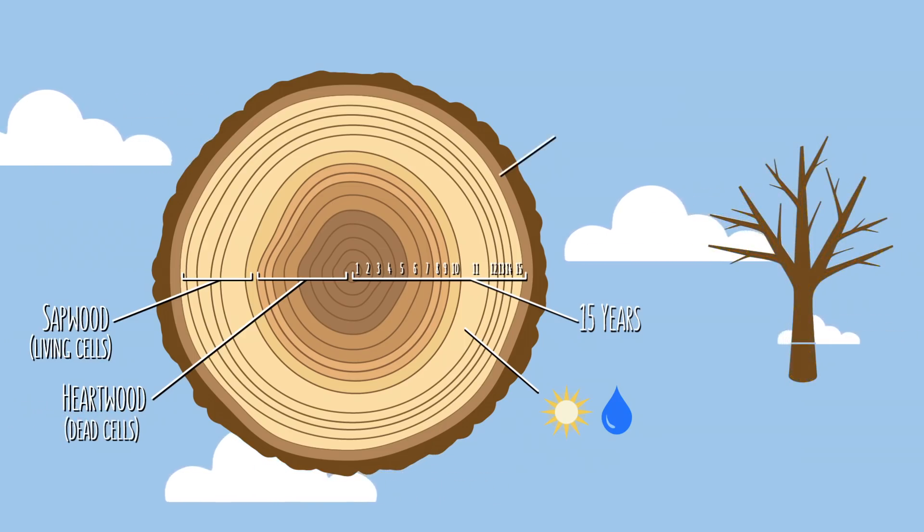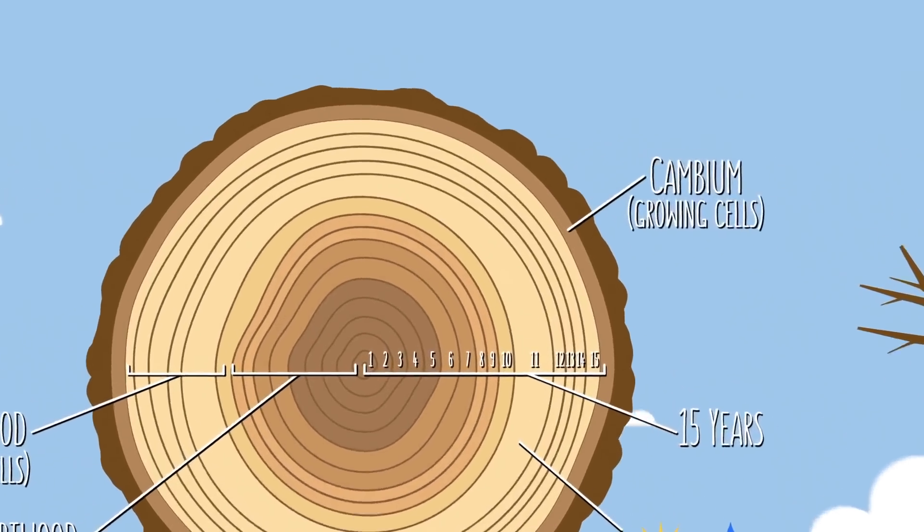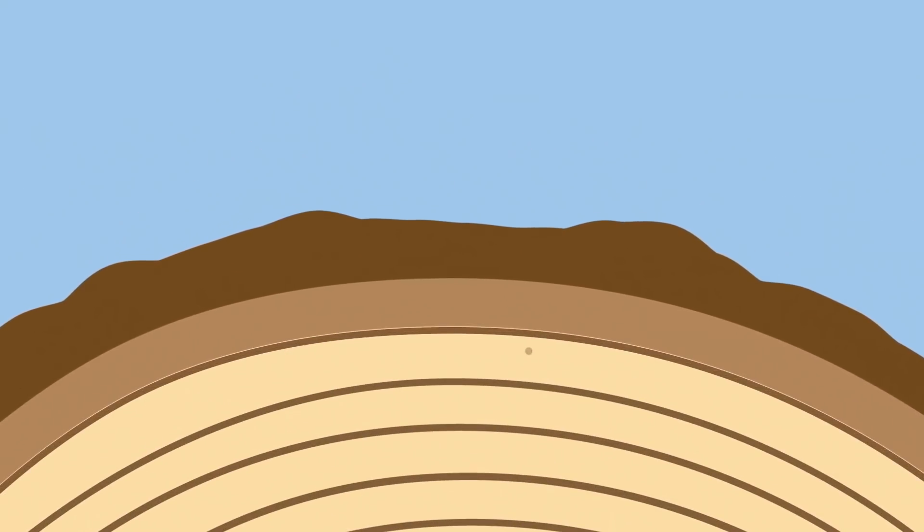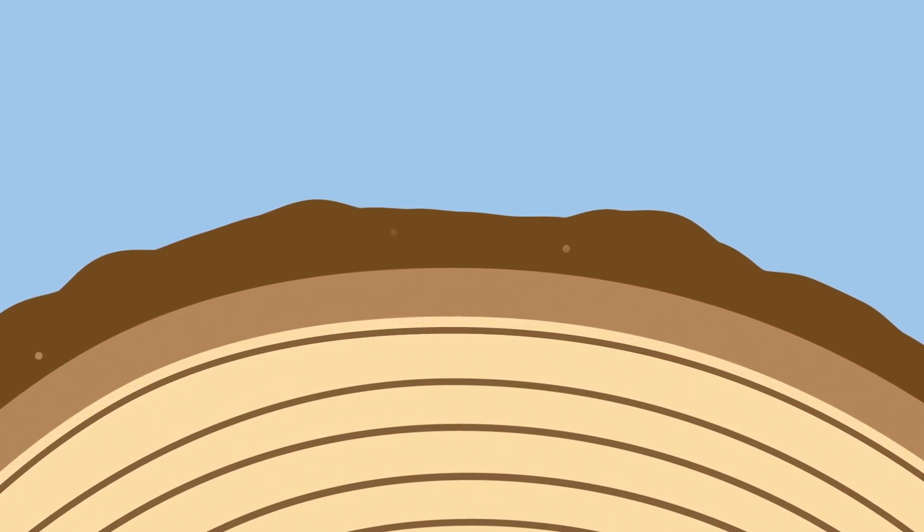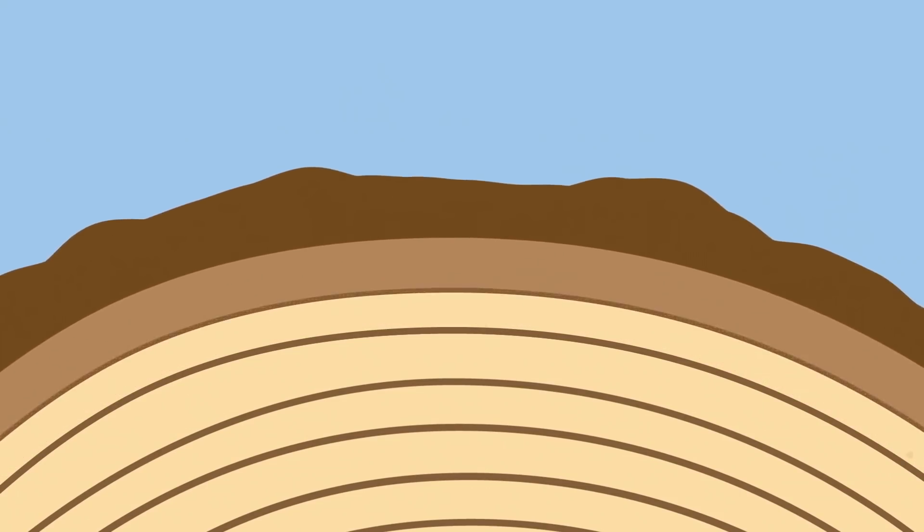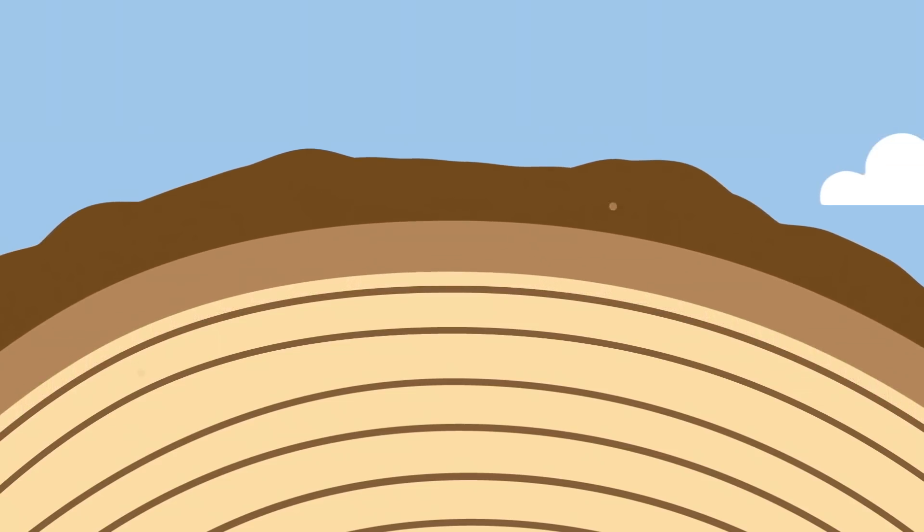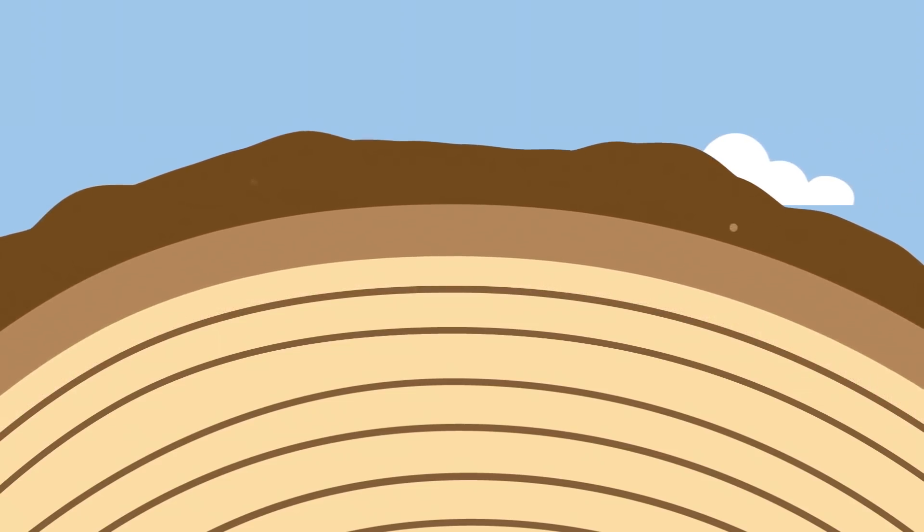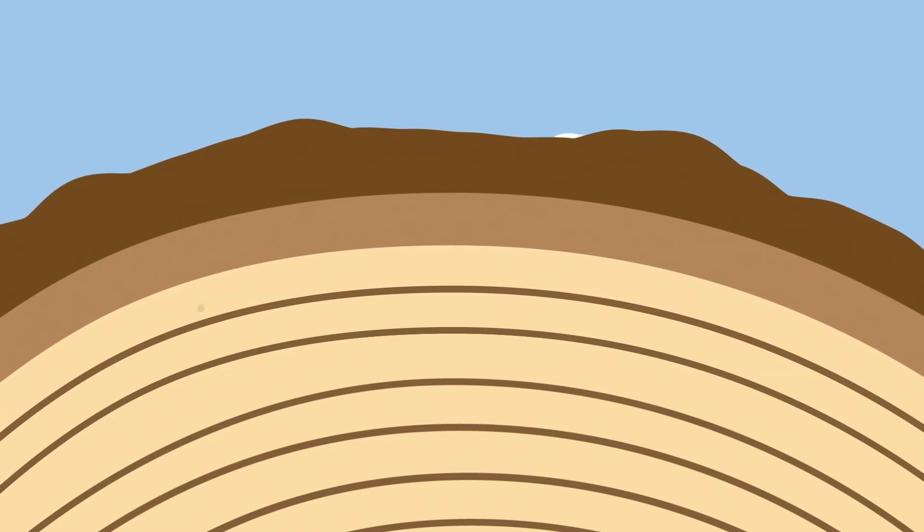And finally, there's the outermost ring, right below the bark. This is called the cambium. And it's the part of the trunk that's not only still living, but also still growing. You see, this ring is constantly generating new sapwood cells on the inside and bark cells on the outside, which means that it's responsible for creating every growth ring all the way back to the beginning. And for that matter, it's responsible for every future growth ring as well. So without the cambium, tree trunks could never grow wider. And as you'll see in a moment, they could never fully heal themselves either.